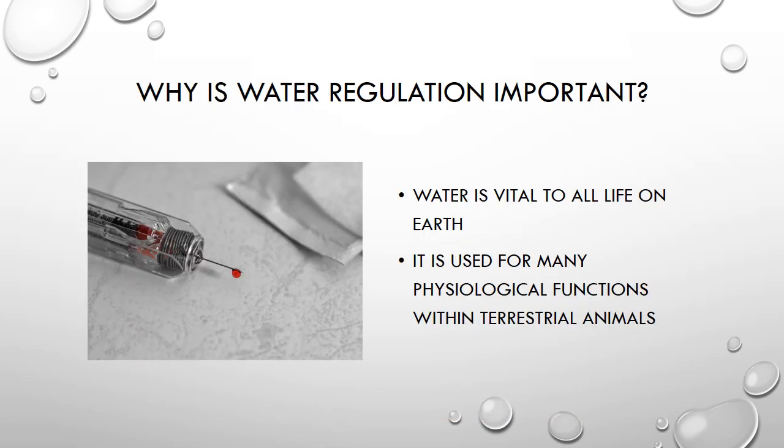So why is water regulation important? Water regulation is vital to all life on Earth. In fact, the human body is made up of about 70% water. Water is involved in many physiological functions of terrestrial animals, such as temperature regulation through evaporation, transportation of nutrients and ions throughout the body, hydrolysis, and ATP production.